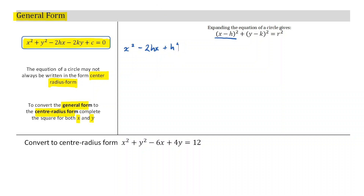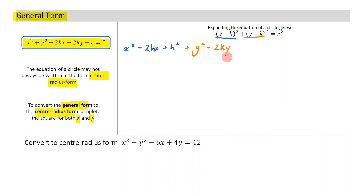Then I do the same thing for the y term. I get plus y squared, minus two ky, plus k squared. Then I move the r squared over to get minus r squared. This whole thing is equal to zero.